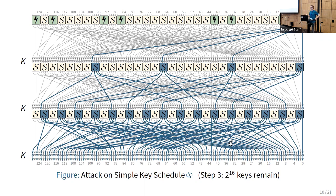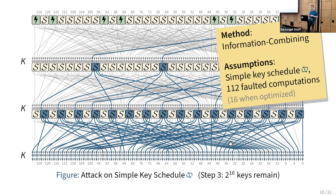Crucially, all of these attacks are possible because we have the same key in each round. To summarize, we can combine information across rounds to attack the simple key schedule. In a naive attack we need 112 faulted computations, while in an optimized attack we can reduce that down to 16 to get a similar reduction in key space.